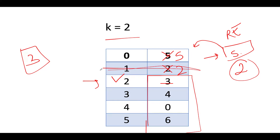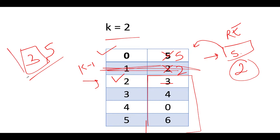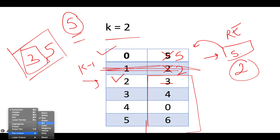Takeaway again: index one, which is k minus one, can never lead to your answer. Index zero and index two (the kth index) can both contribute. Out of three and five, the maximum is five, so we return five.